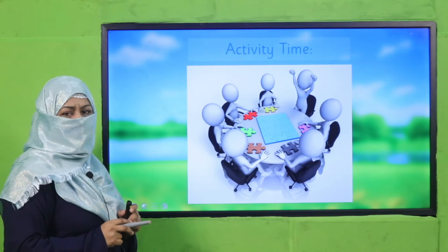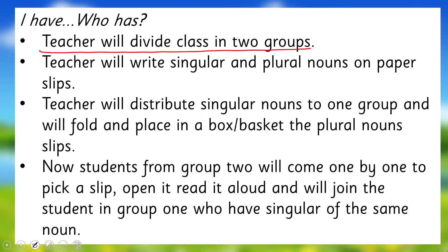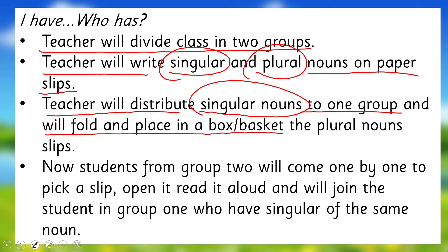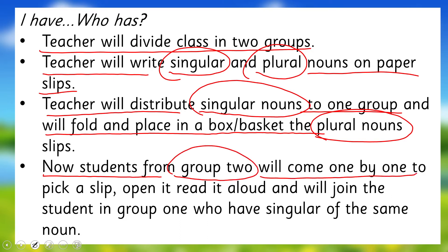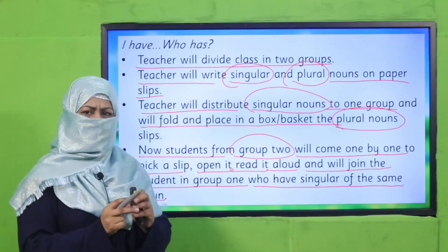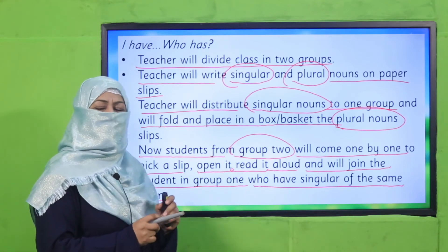We are going to learn many irregular and regular nouns together through an activity. The teacher will divide the class into groups. The teacher will write singular and plural nouns on paper slips, distribute singular nouns to one group, and fold and place the plural nouns in a box or basket. Students from group two will come one by one, pick a slip, open it, read it aloud, and join the student in group one who has the matching singular noun. In this way, the teacher will mix regular and irregular nouns so children learn all of them. Pause the video, enjoy this activity, and then come back.